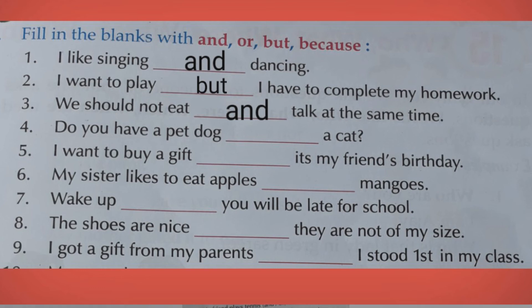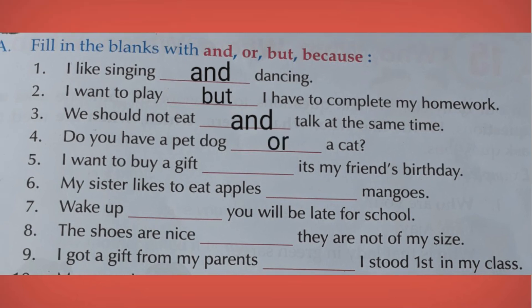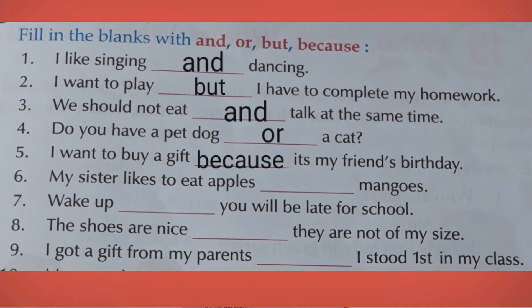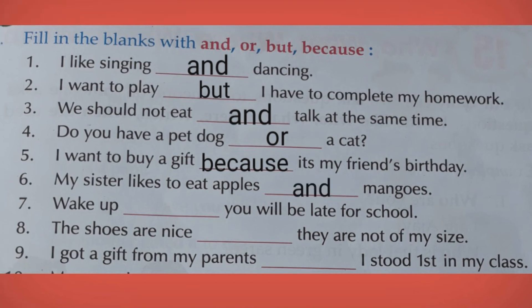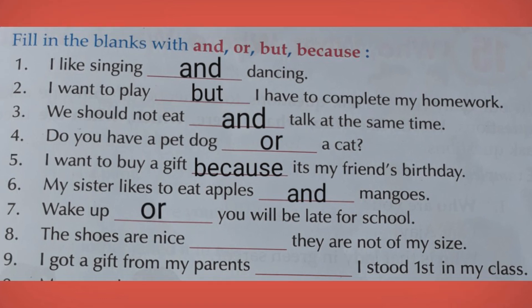Fourth: Do you have a pet dog — or cat? Answer: or. Do you have a pet dog or a cat? Fifth: I want to buy a gift — it's my friend's birthday. Answer: because. I want to buy a gift because it's my friend's birthday. Sixth: My sister likes to eat apples — mangoes. Answer: and. My sister likes to eat apples and mangoes. Seventh: Wake up — you will be late for school. Answer: or. Wake up or you will be late for school.